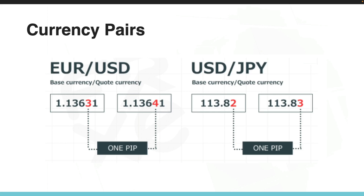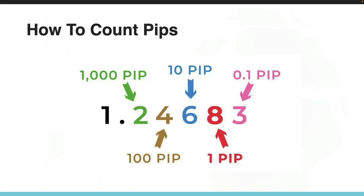Pips are important in forex trading because they are used to calculate the profit or loss of a trade. The value of a pip depends on the currency pair being traded, the size of the pip, and the exchange rate of the currency pair. Here's another diagram to show you how to count pips.